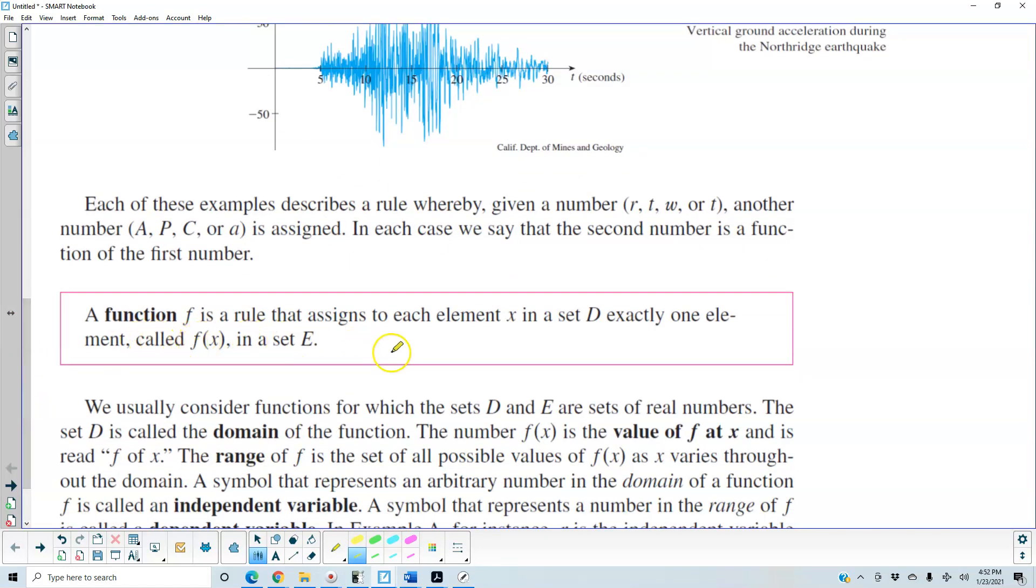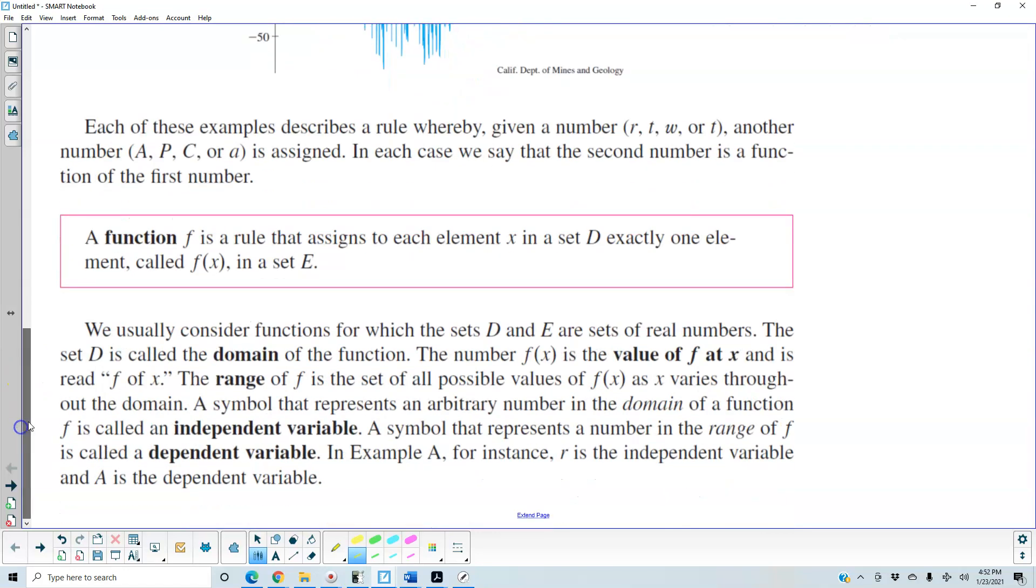A function f is a rule that assigns to each element x in a set D, exactly one element, called f of x in a set E. We usually consider functions for which the sets D and E are sets of real numbers. The set D is called the domain of the function. The number f of x is the value of f at x and is read f of x. The range of f is the set of all possible values of f of x as x varies throughout the domain. A symbol that represents an arbitrary number in a domain of a function f is called an independent variable and a symbol that represents a number in the range of f is called a dependent variable.